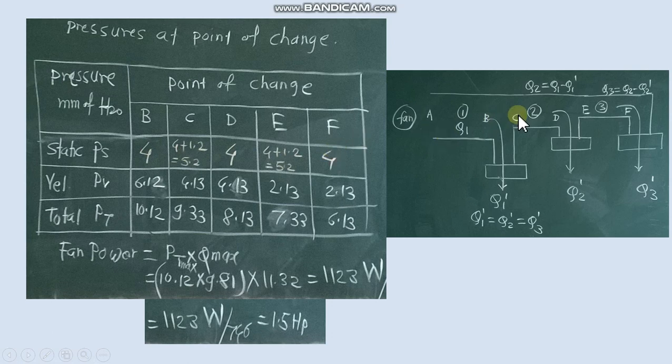So at C pressure will be 4 plus 1.2 that is PF value, 5.2. So C and E we will have same value. Then PV value at B point we calculated. Now in CD duct and in EF duct PV values are same. So PV value CD here and PV value for EF duct.